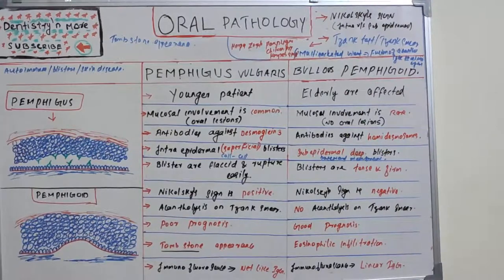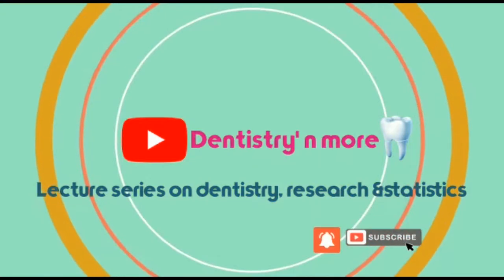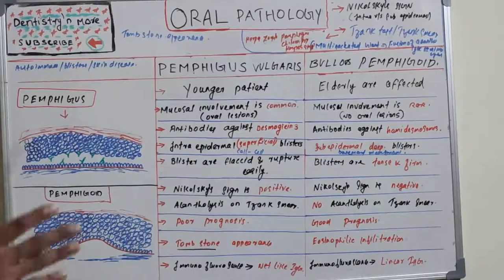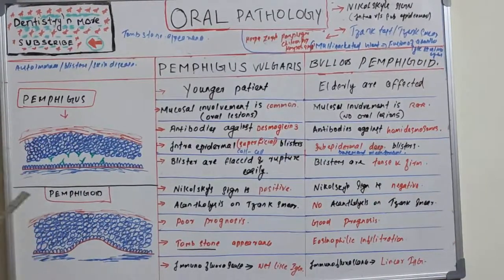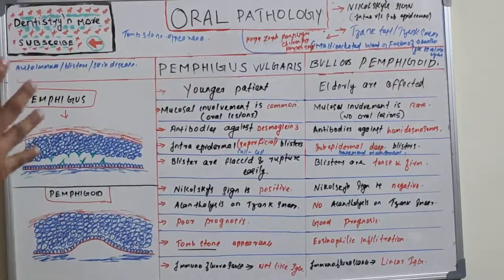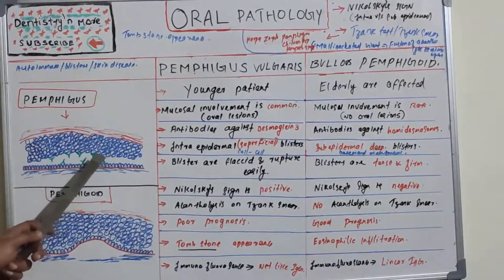So what is the fundamental difference between pemphigus and pemphigoid? There are lots of differences between these two skin diseases. The common thing is both are autoimmune diseases — our own antibodies acting against our own cells and causing destruction. Both are autoimmune in nature, but the mechanism of blister formation is different. In pemphigus it is intra-epidermal blister formation.